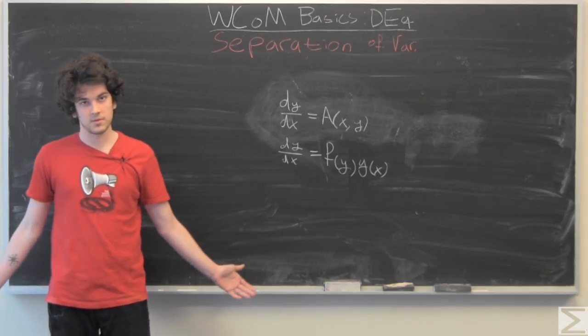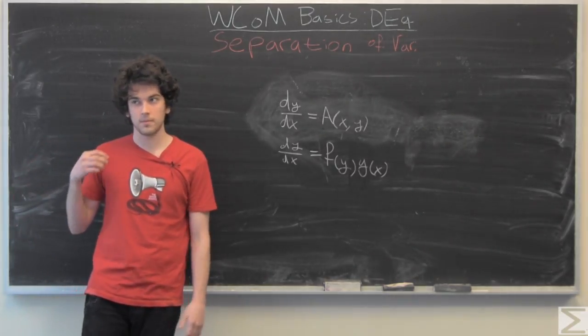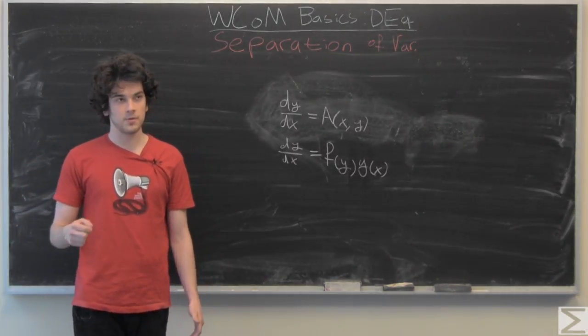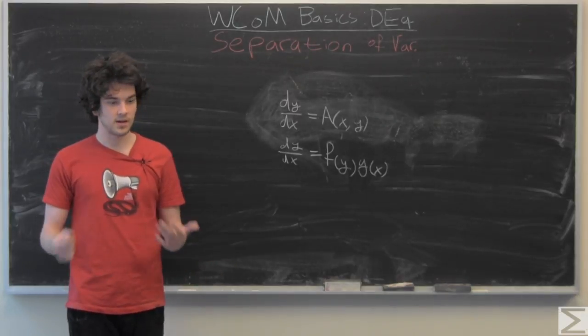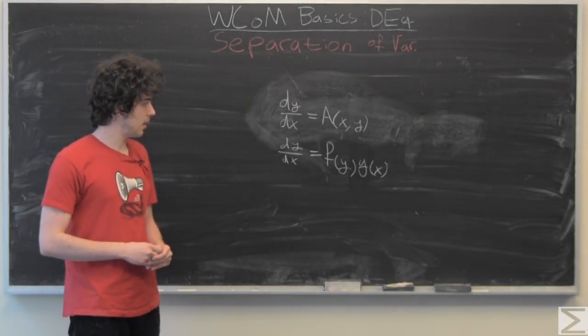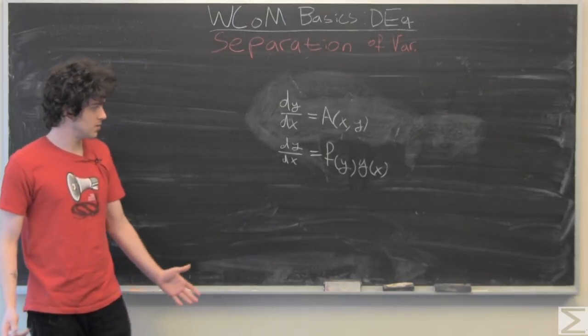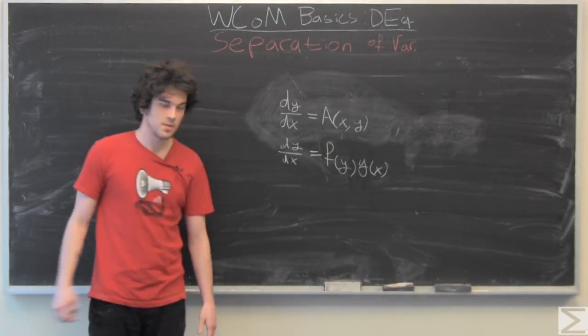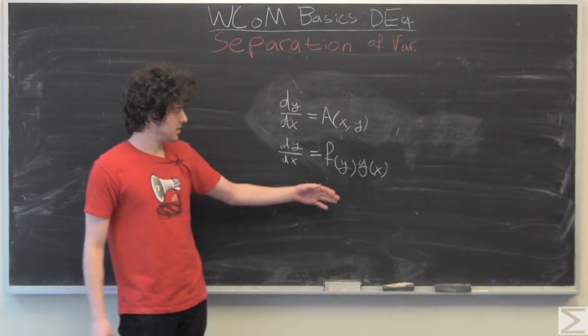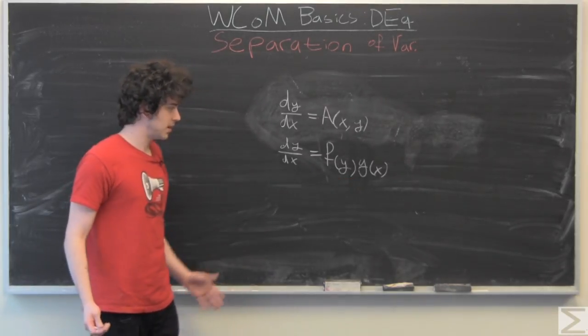So how are we going to solve this? Basically, we're going to go through a few algebraic and calculus-based steps. The first thing you're going to want to do is move anything that contains a y, so f of y to one side. We can divide both sides by f of y.